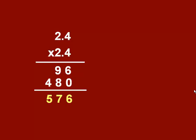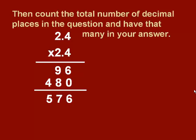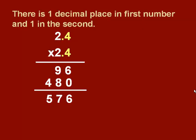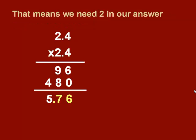Now we'll go back and put in our decimals. So we have one decimal place in our first number, one decimal place in our second number. So in our answer, we need to have two decimal places. So our answer is 5.76.